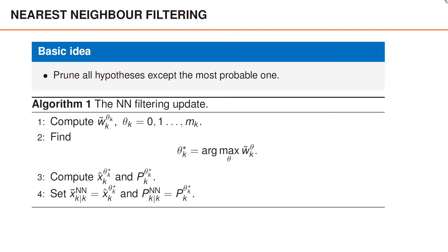We can describe this procedure in terms of an explicit algorithm. As a first step, we compute the unnormalized weights w-tilde for all the hypotheses theta_k. We can then use these to find the most probable hypothesis by identifying the index theta for which w-tilde is maximized. In theory, we really want to maximize the normalized weights, but since the only difference is a proportionality constant, this maximization gives the same result.